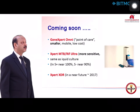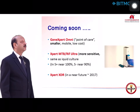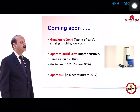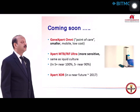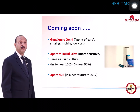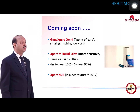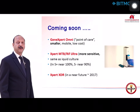Soon we are going to have GeneXpert Omni — a point-of-care test that is smaller, mobile, and low cost, which can be placed in field conditions and clinics for early diagnosis. We are also looking at GeneXpert MTB/RIF Ultra, which is more sensitive — almost as sensitive as liquid culture — catching almost 100% of smear-positive and around 90% of smear-negative cases. GeneXpert XDR, which will tell us about fluoroquinolones and injectables, is expected by end of 2017.